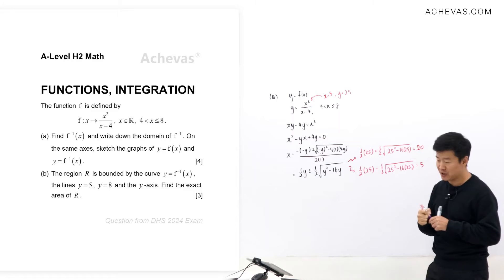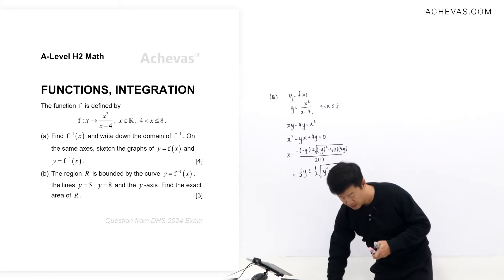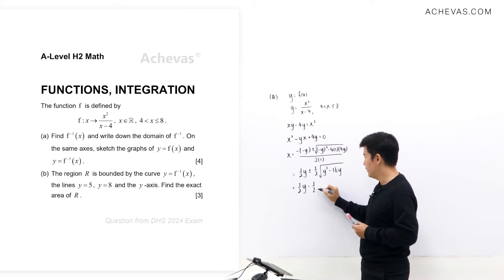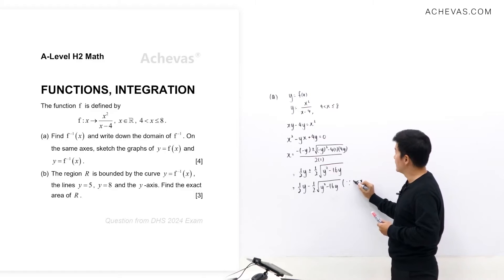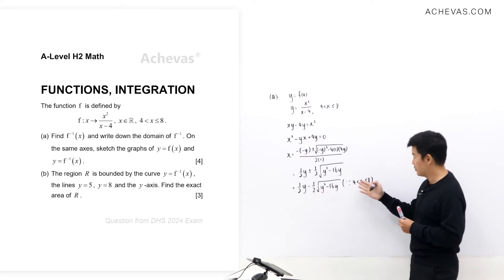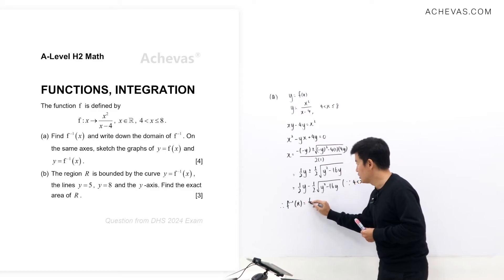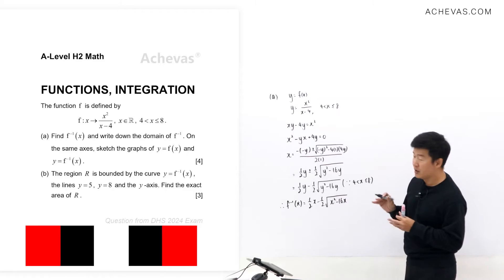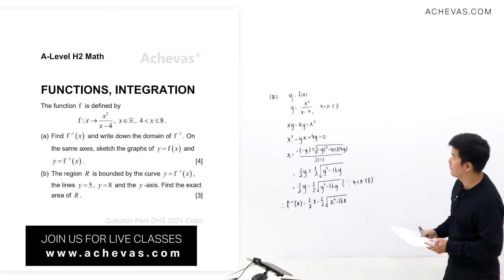Based on this analysis, we choose the minus sign. So f inverse is: f⁻¹(x) = ½x - ½√(x² - 16x). This is valid when x is between 4 and 8, as only this expression produces values in that range.